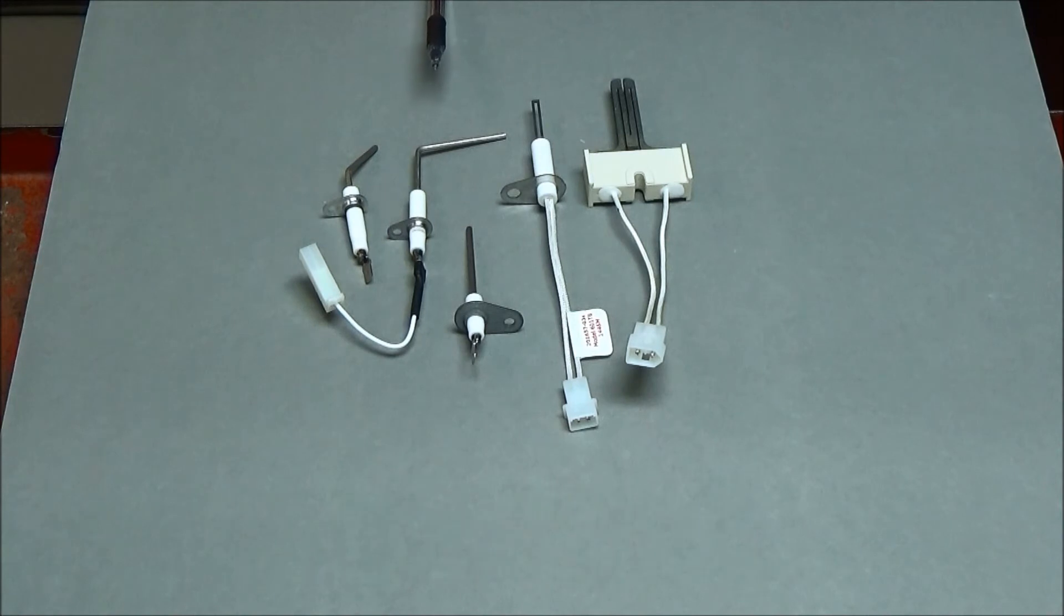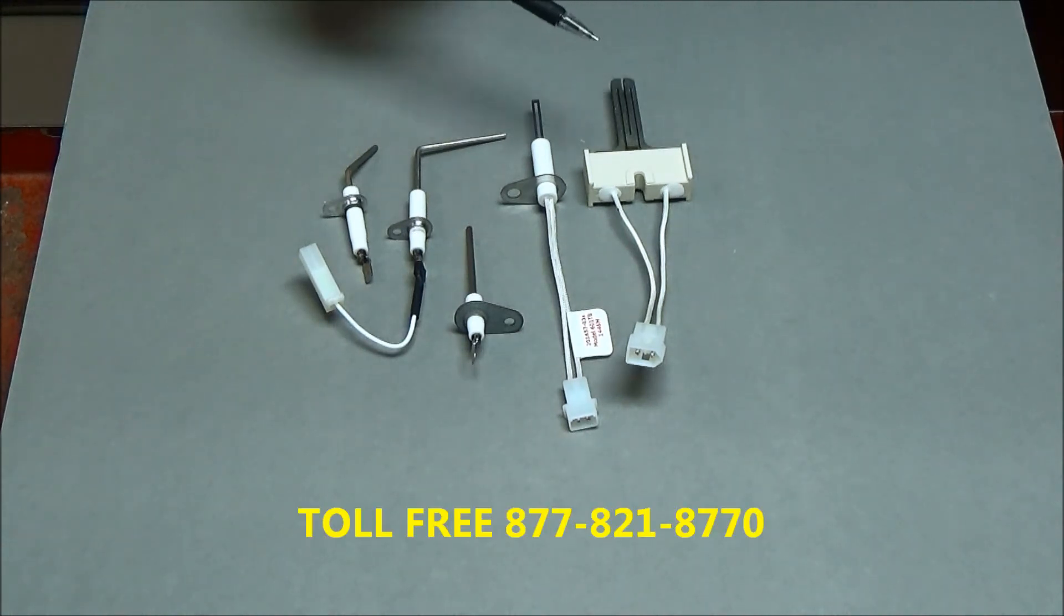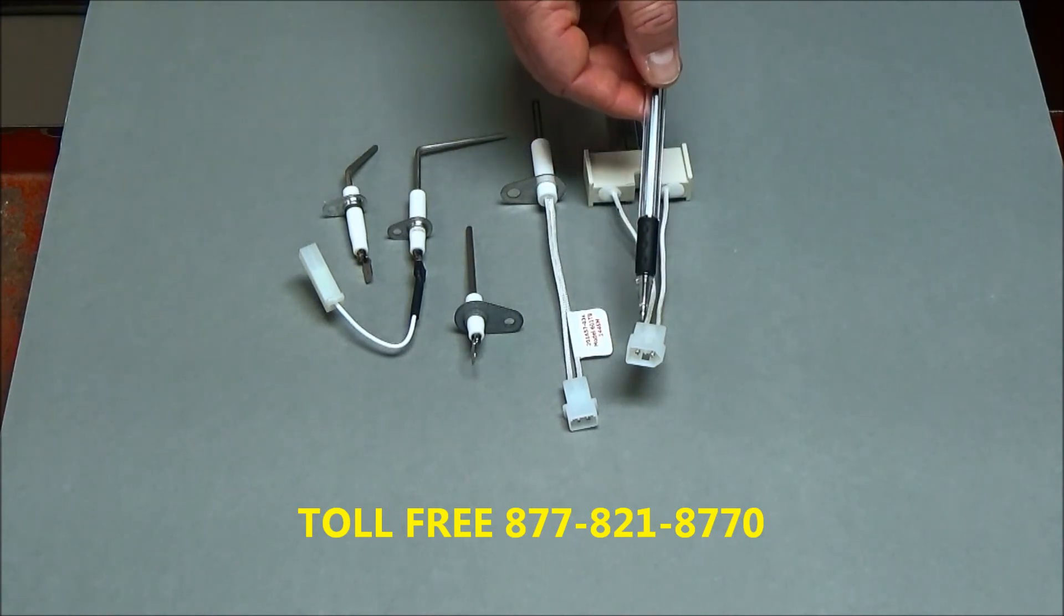Issues we see with igniters include cracks right across the middle. They're very difficult to see, but you'll usually see a little white powder around them. The best way to check this igniter is to take a meter and go in these ports with your meter leads.